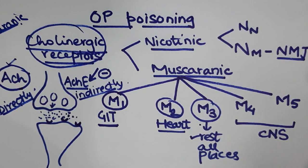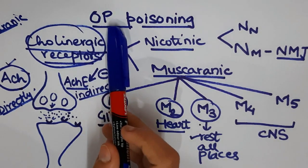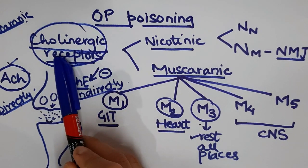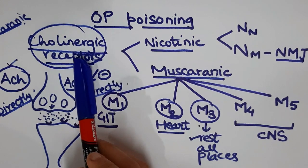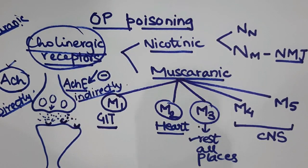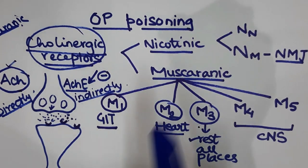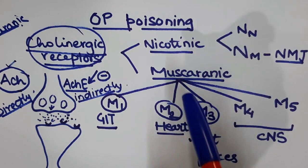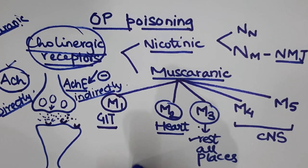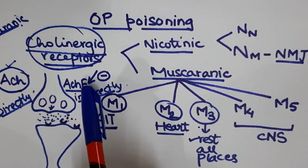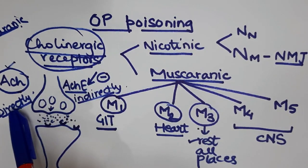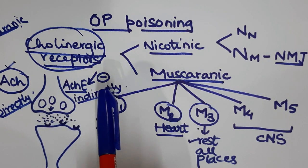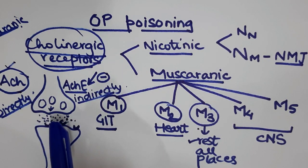In cholinergic drugs we have two groups: directly acting and indirectly acting. Directly acting cholinergics act directly on the nicotinic and muscarinic receptors, while indirectly acting cholinergics prevent the hydrolysis of acetylcholine, thus increasing its action in the synapse or neuromuscular junction.